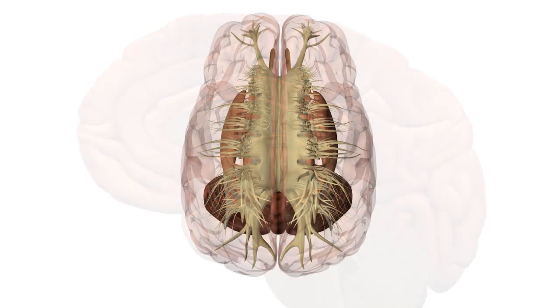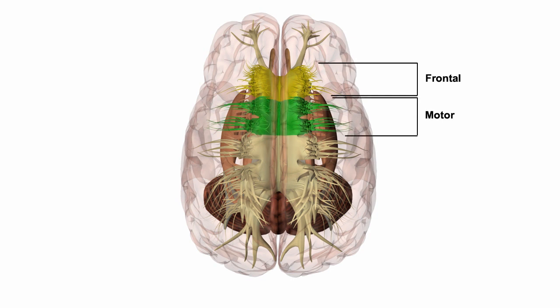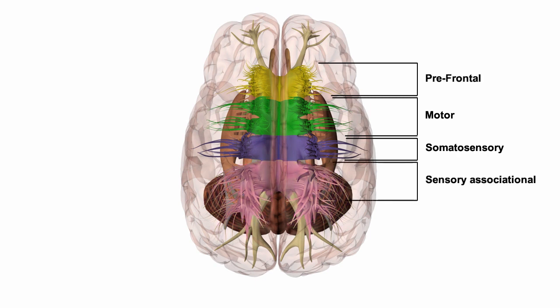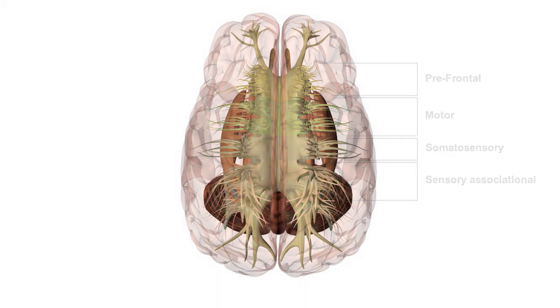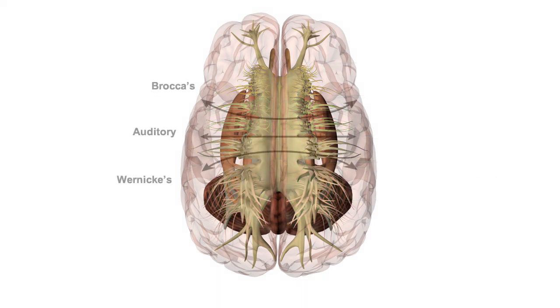Moving from the forceps minor, the bundles connect the frontal lobes, followed by the premotor and motor cortices, including the supplementary motor areas, somatosensory cortices, and the sensory and visual associational cortices. Through the central part of the trunk, fibres also connect the left-sided language centres with their equivalents on the right side, as well as the auditory cortices.